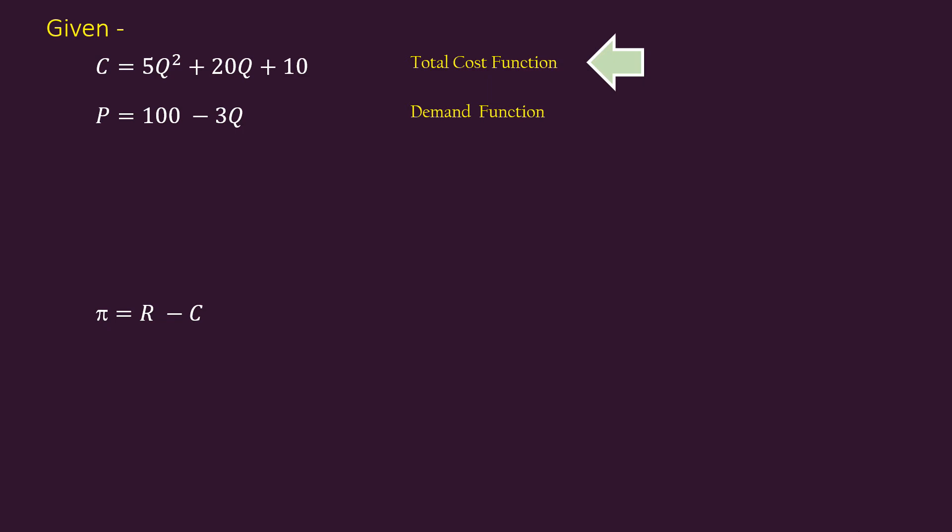We have to find it using the demand function. Revenue function is output times demand function. Output is Q. Demand function is P equal to 100 minus 3Q.